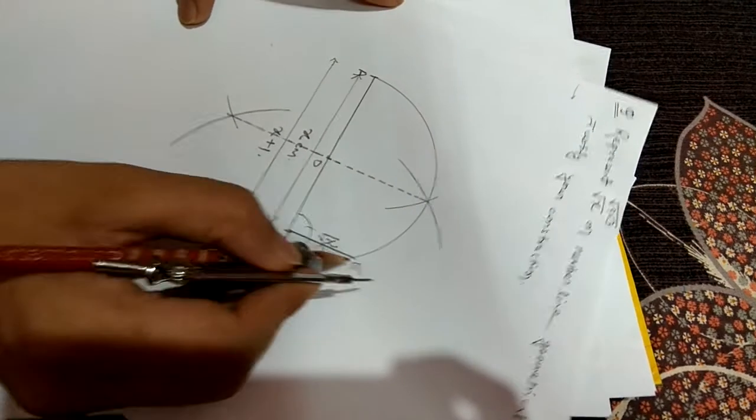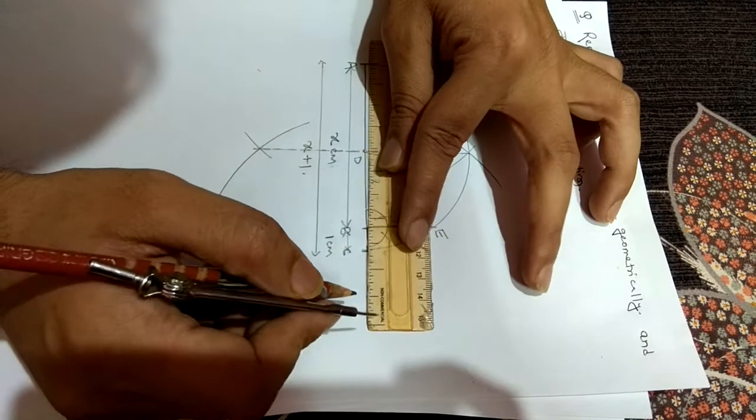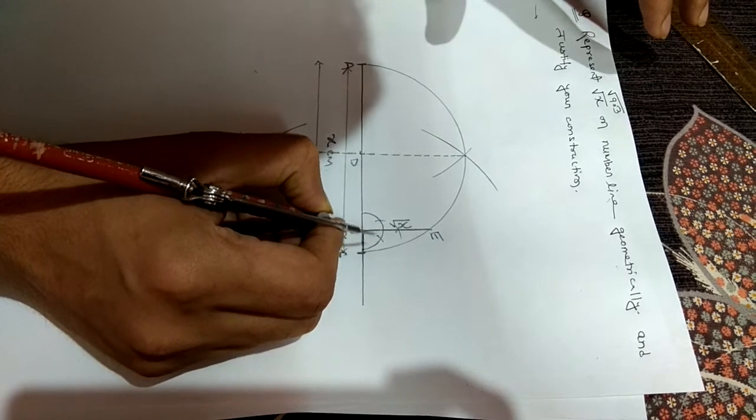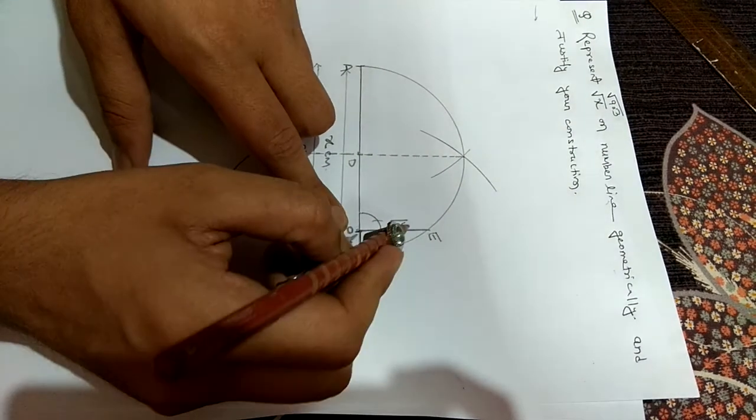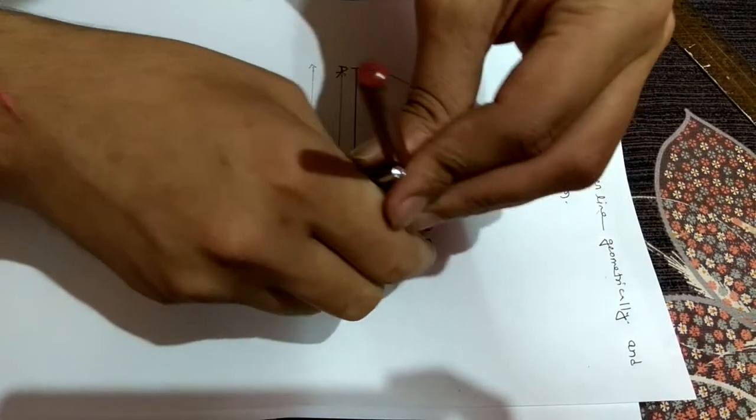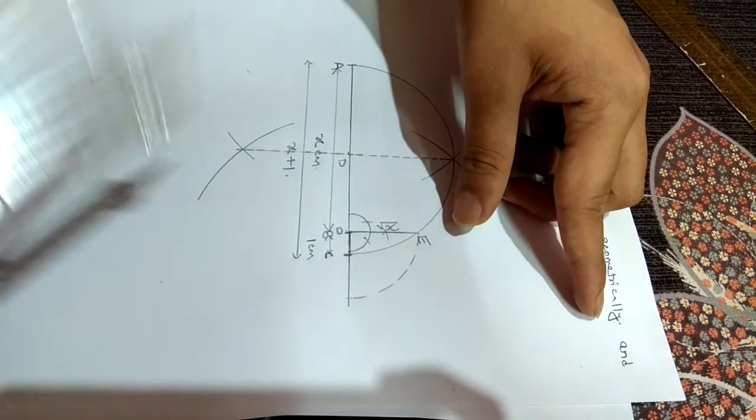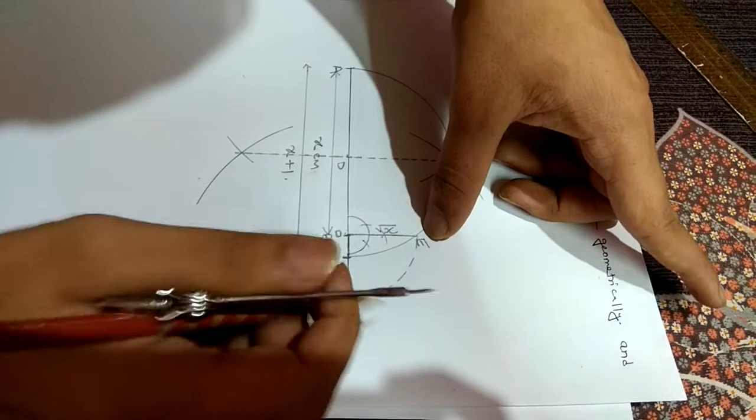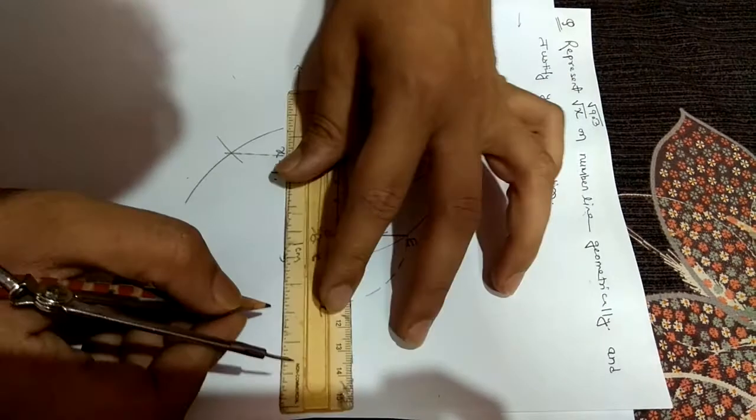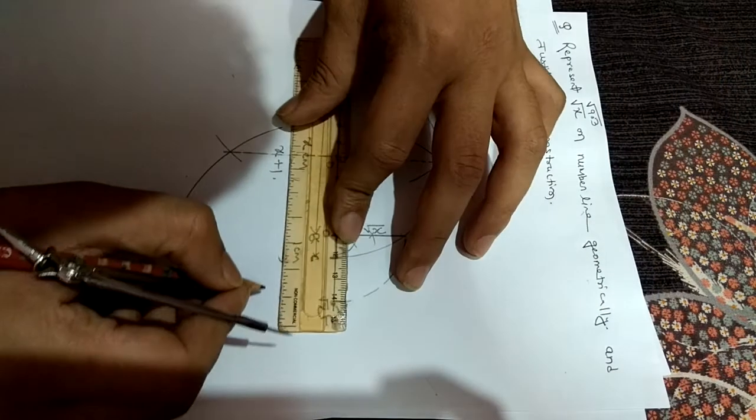Further, if we have number line, mark 0 here. If we are considering this as 0 mark, then this will be root x. If you mark 0 here, then this will become the position.